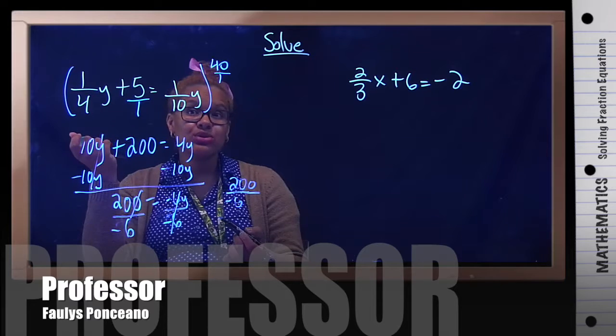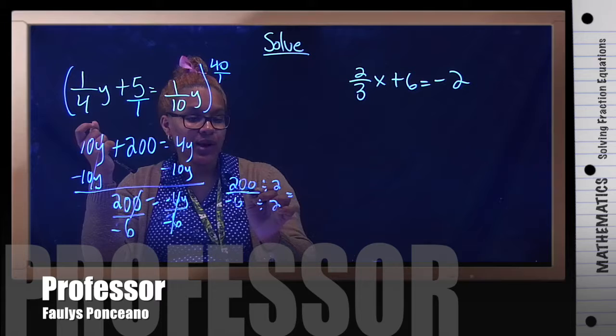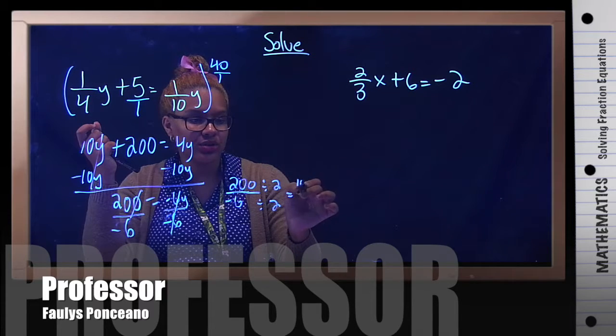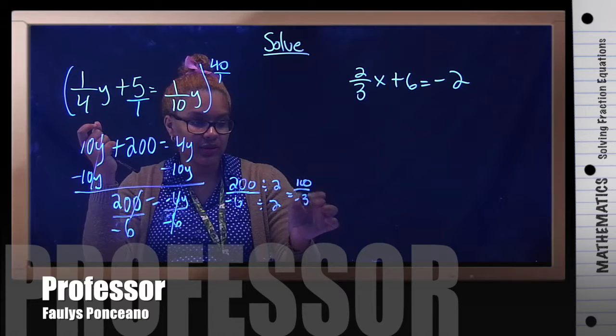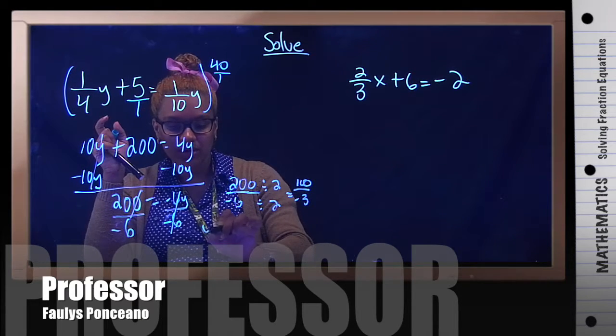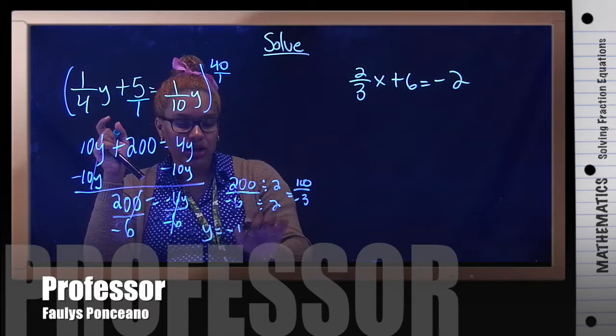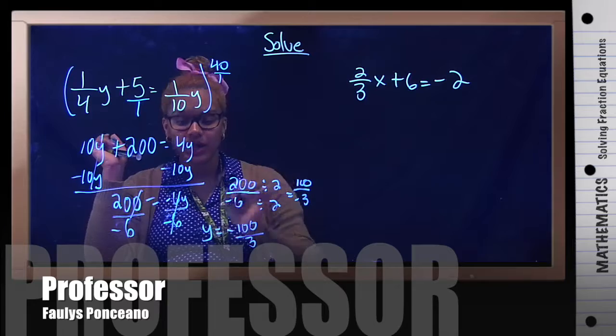Then I have 200 divided by negative 6. Well, we need to check. Let's divide both by 2. 200 divided by 2 is 100, and negative 6 divided by 2 is negative 3. I don't think you can divide that no more. So your answer is y equals negative 100 over 3. And that's it.